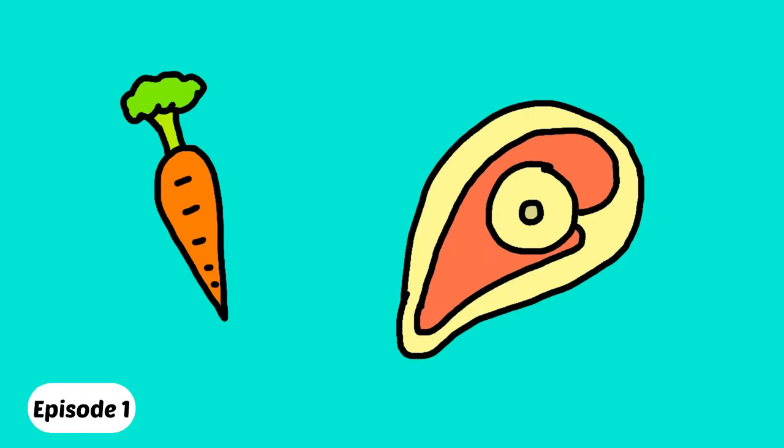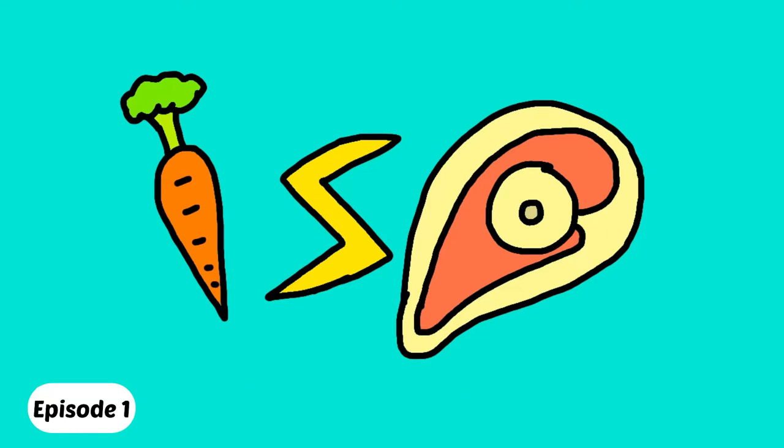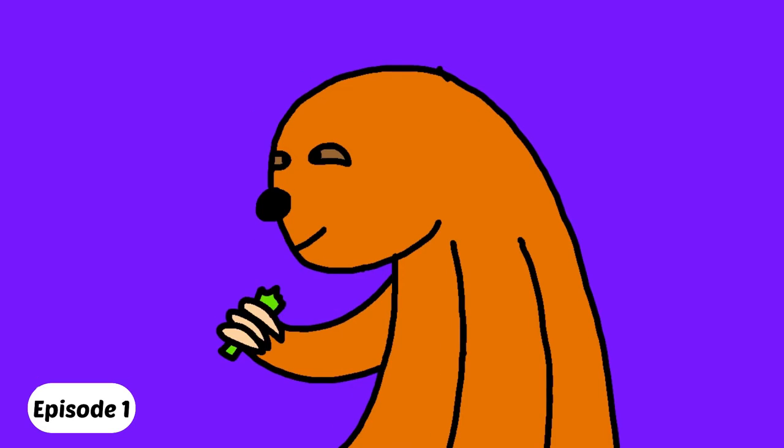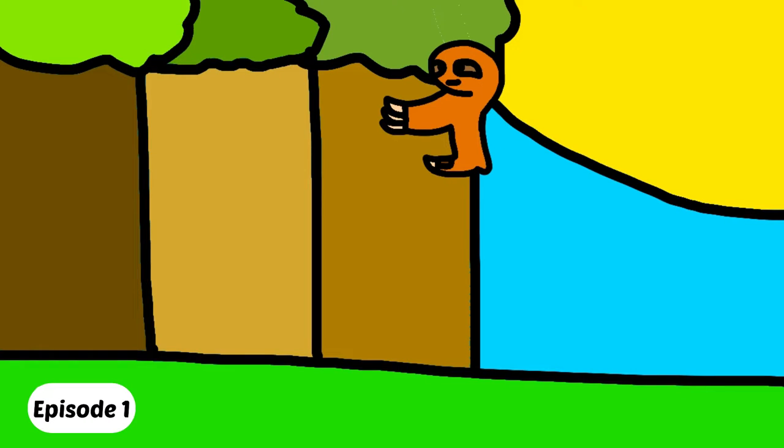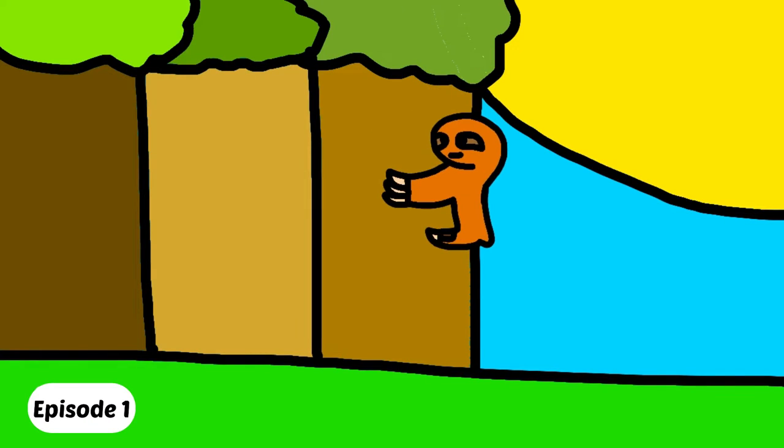But why are sloths the chilliest animal? Food like vegetables and meat give us energy to move around, but sloths only eat leaves, which contain barely any energy to move, and so sloths are very, very slow.